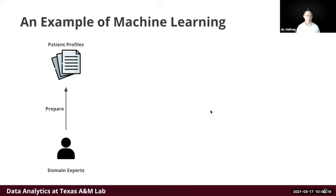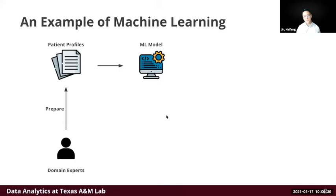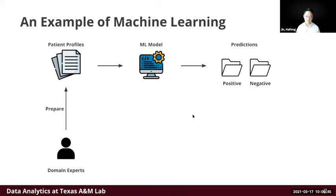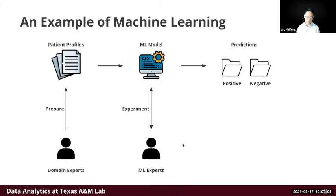Let's start with a simple example of machine learning. We have some domain experts — they may be medical doctors in hospitals. We prepare some patient profiles used as training data for machine learning, and then we use these data to train a machine learning model capable of making predictions for a certain type of disease, whether a patient has the disease — positive or negative. However, the machine learning model doesn't come for free; we also need machine learning experts to do multiple rounds of experiments with the data and the model, including data pre-processing and post-processing pipelines, in order to tune for a good model with good performance.